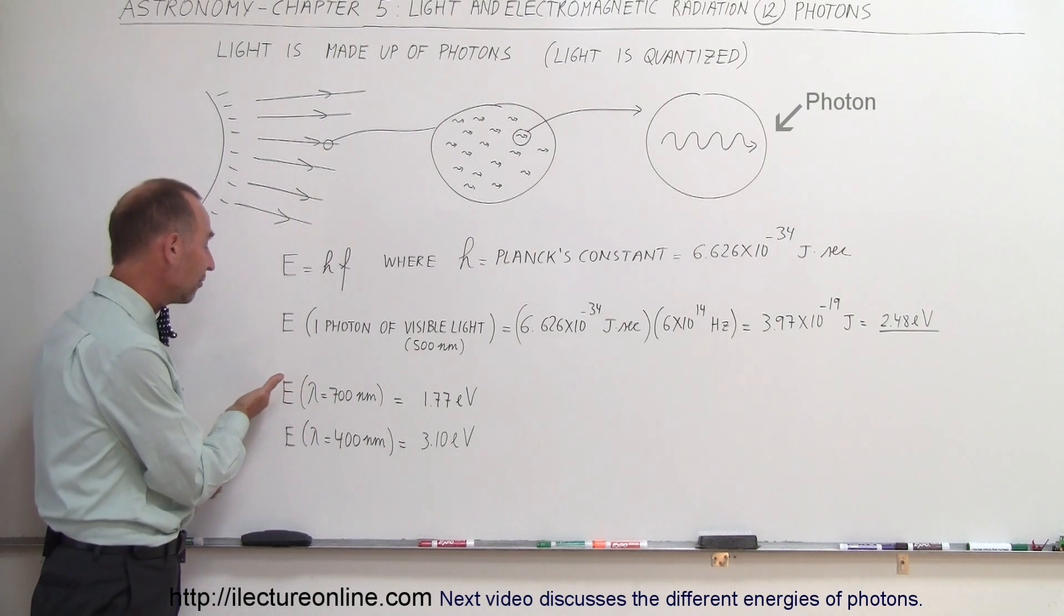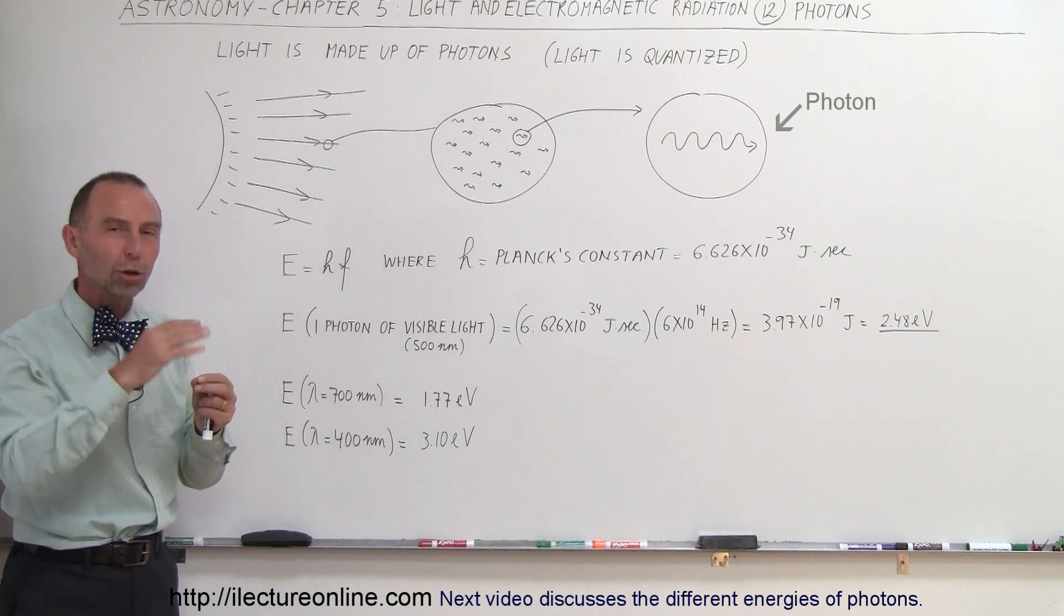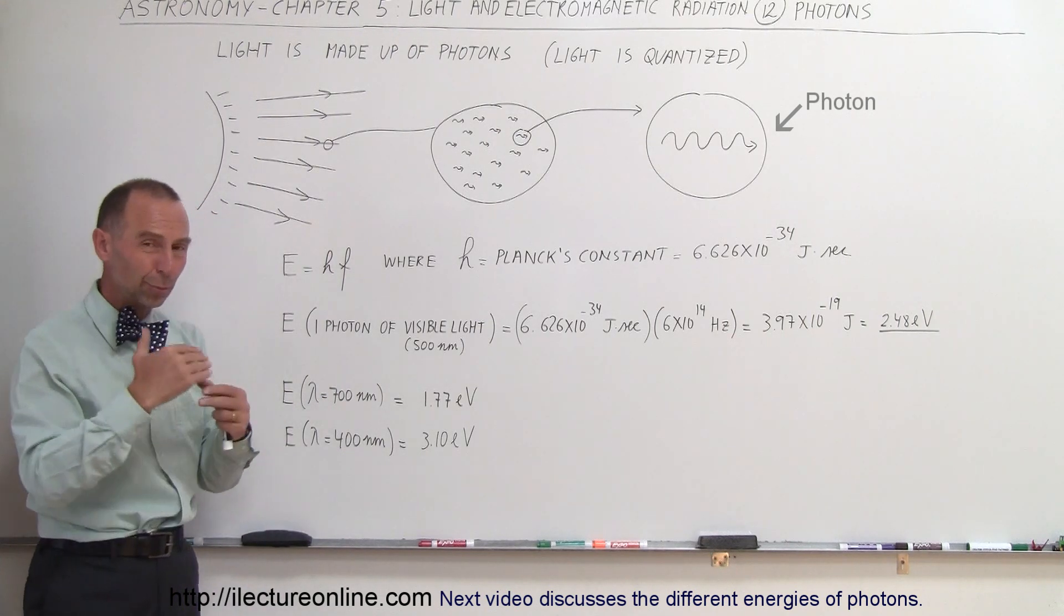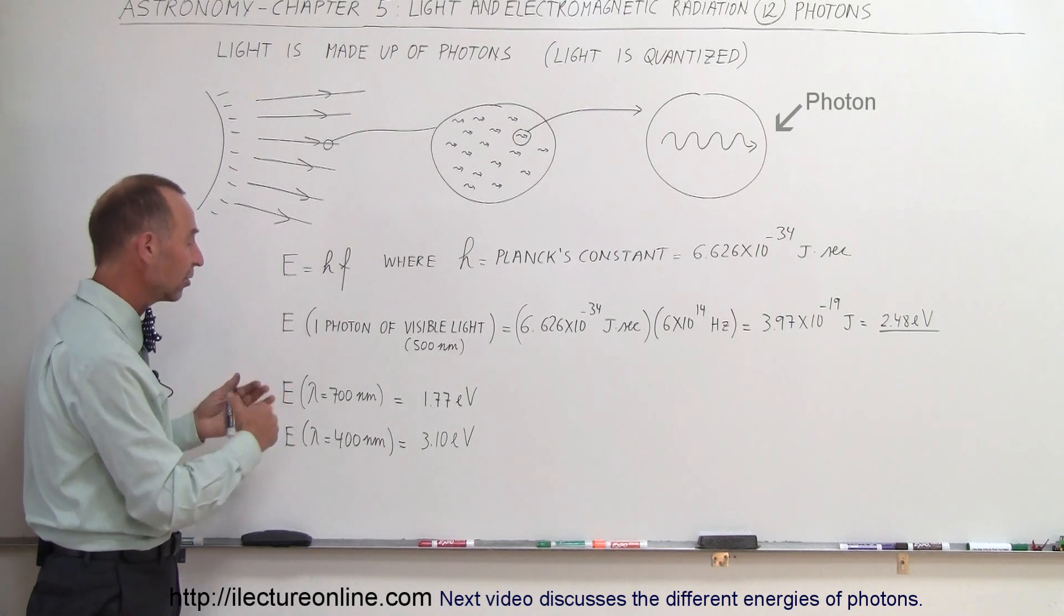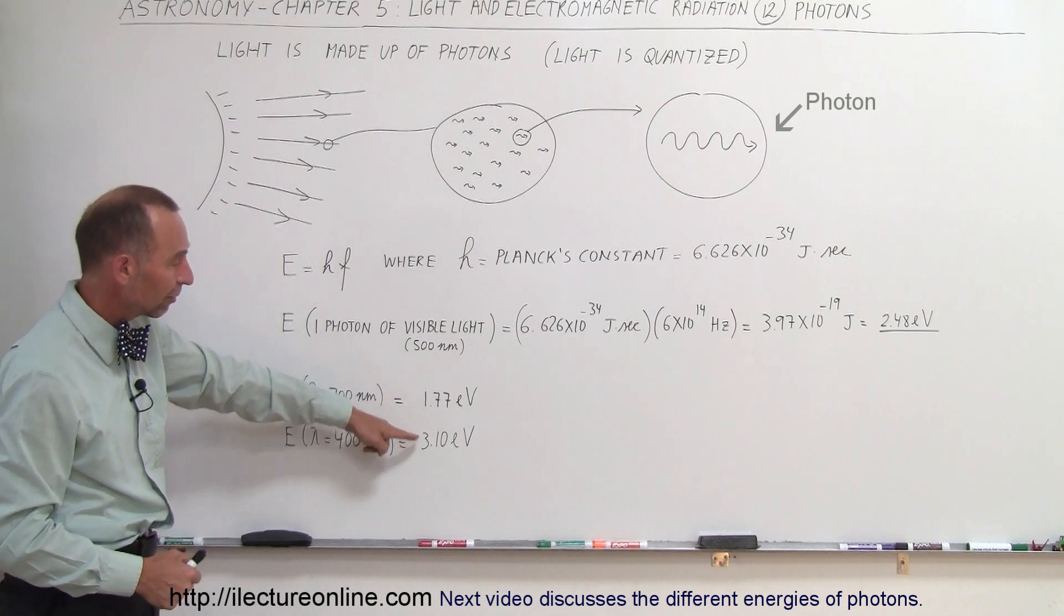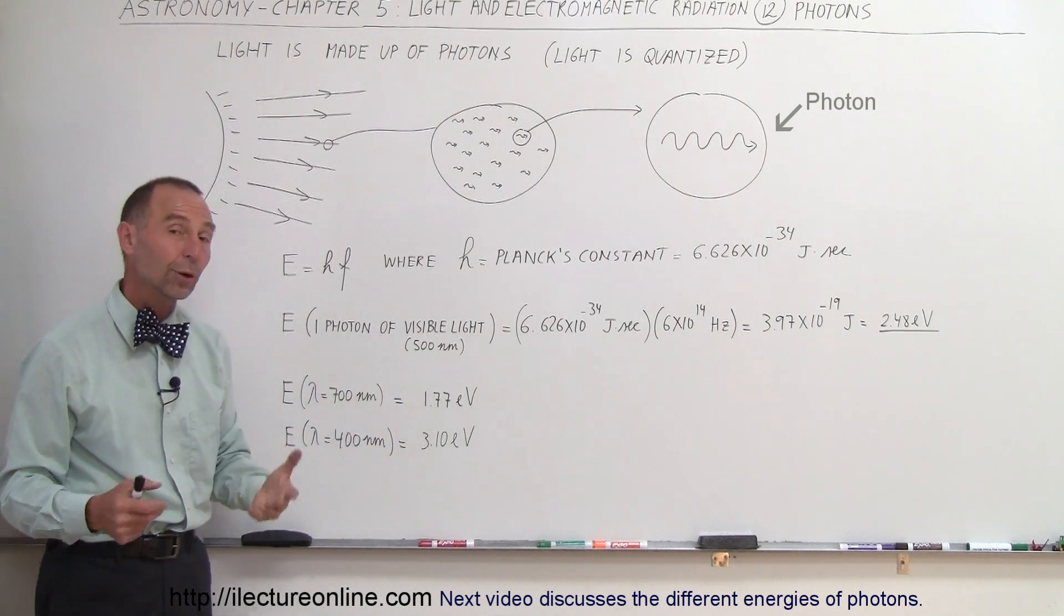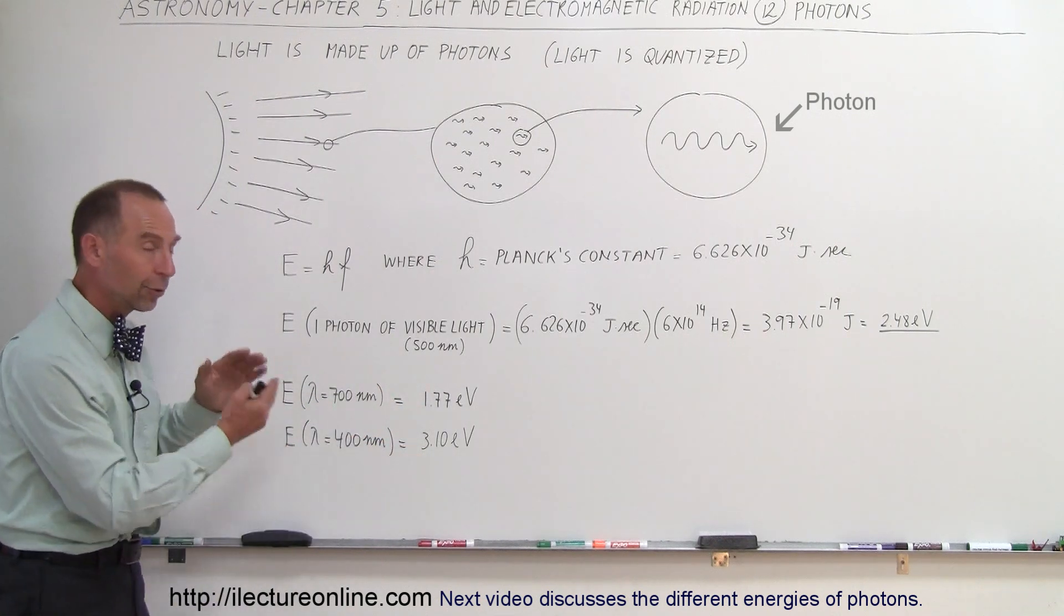Now since light varies from 700 nanometers for red light, lower frequencies, lowest energy level, to 400 nanometers for the bluish purplish light, which has a higher energy, you can see that photons of light vary in energy from 1.77 electron volts to 3.10 electron volts, and of course everything in between.